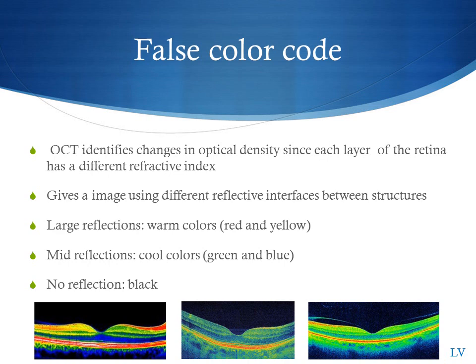When looking at an OCT scan, you can evaluate the scan either in false color code or black and white. Things that are hyperreflective give a warmer color, such as red and yellow. Things that are minimally reflective and absorbing are black.